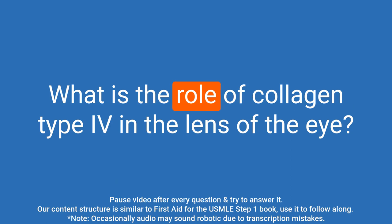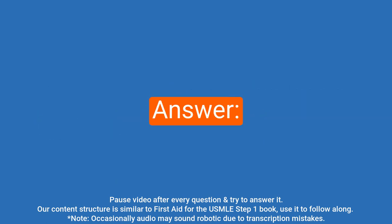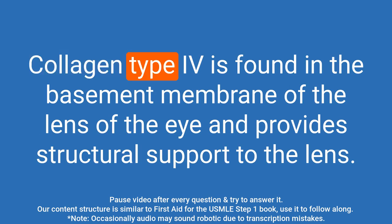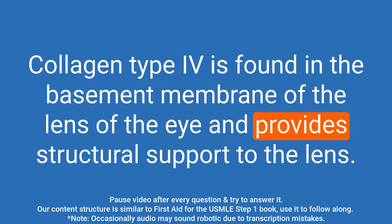Question: What is the role of collagen type IV in the lens of the eye? Answer: Collagen type IV is found in the basement membrane of the lens of the eye and provides structural support to the lens.